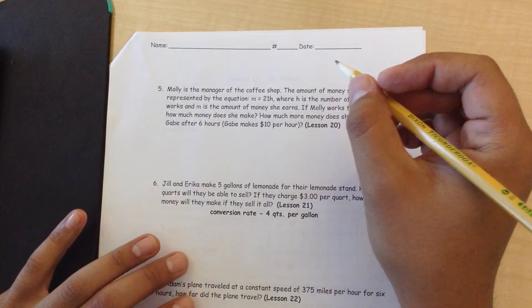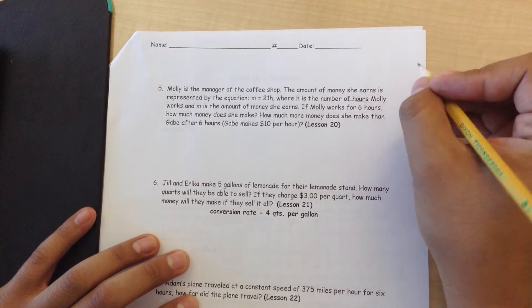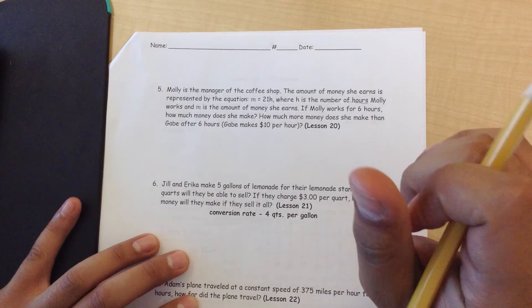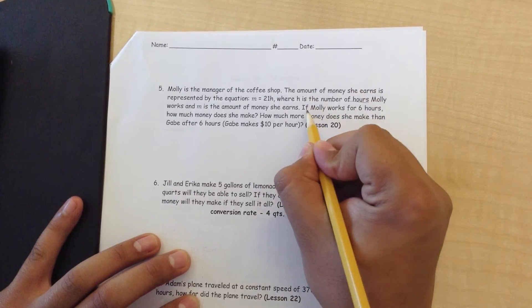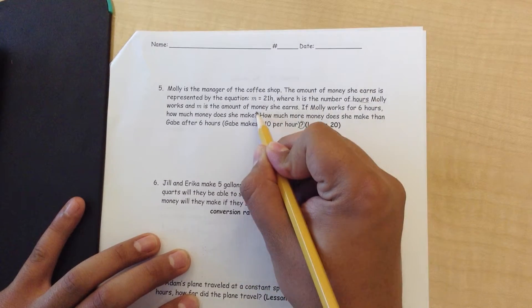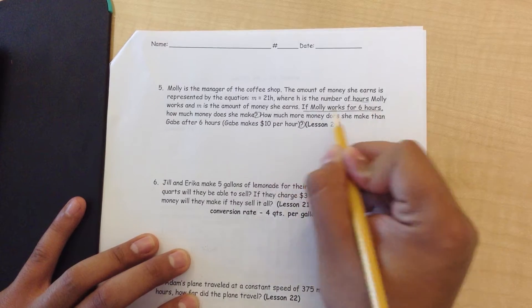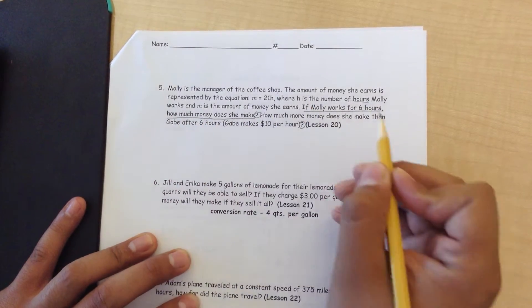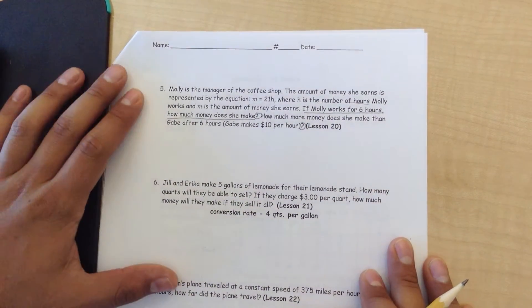First off, let's not look too much into this. Let's look at the first question it's asking, because if you've noticed, there's two question marks here. If Molly works for 6 hours, how much money does she make? Let's just focus on Molly right now.